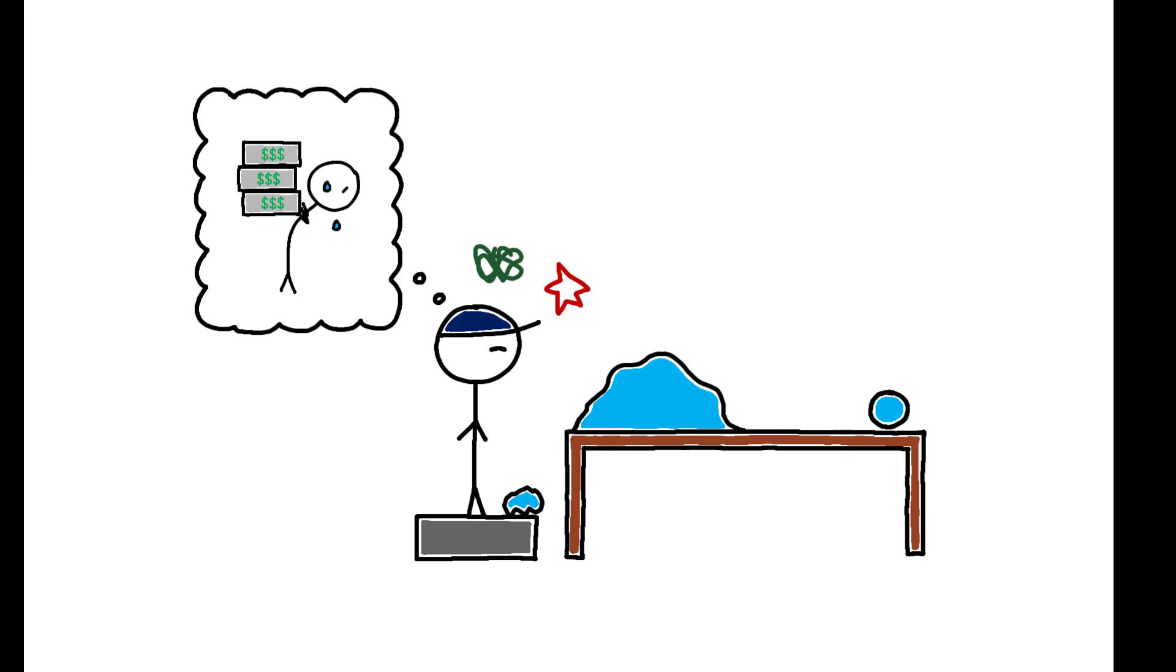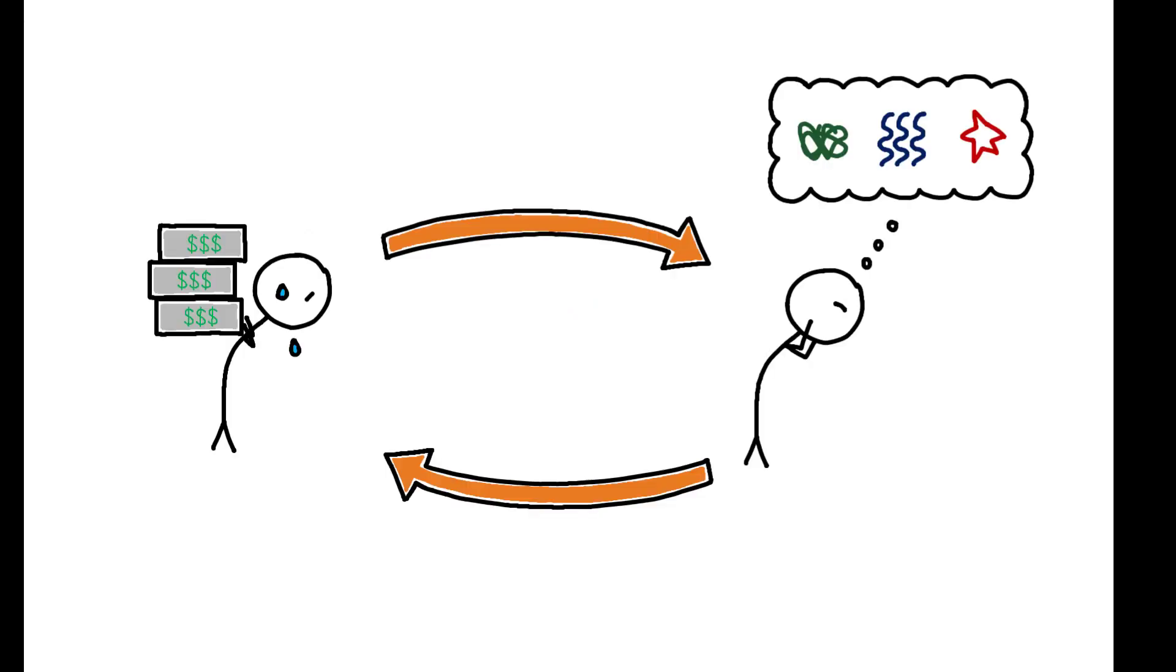This implies that individuals may be less productive precisely when they are under the greatest financial hardship and money is most needed, and reinforces the links between economic and psychological stress and the dynamics of poverty.